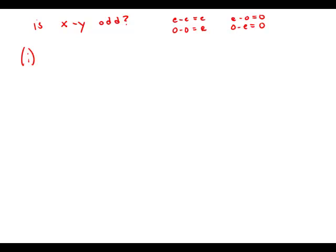Statement one tells us that x equals z squared. That statement by itself tells us nothing about y. Because we have no information about y, we cannot draw any conclusion about x minus y. This statement by itself is insufficient.